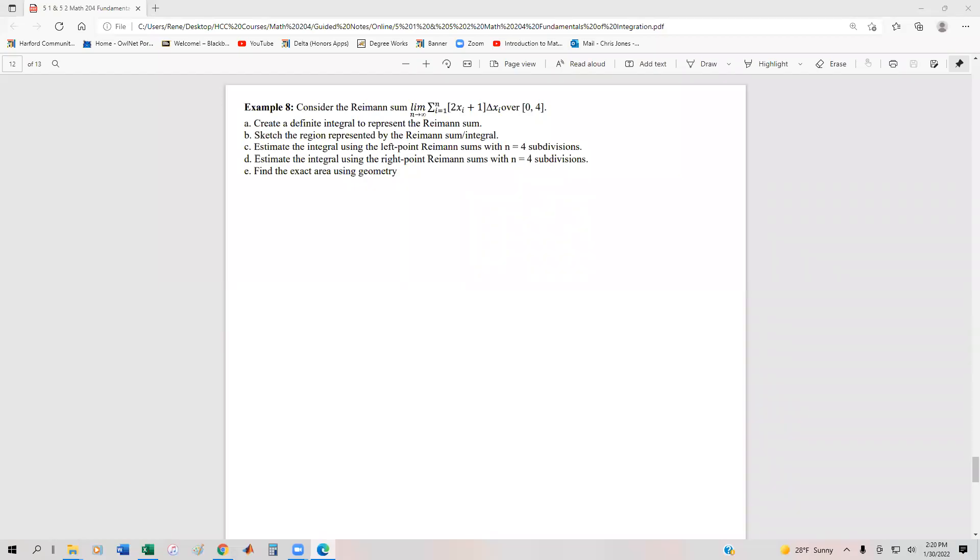This example is going to tie everything we've done in the section together. We have a Riemann sum, we're going to convert that Riemann sum to an integral, sketch the region, use the left and right-hand Riemann sums to approximate the value of the integral, and then find the exact value of the integral using geometry.